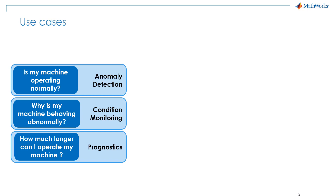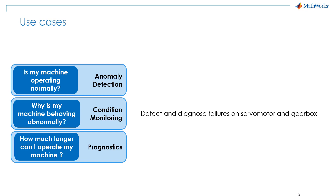We can then take this a step further and look at condition monitoring. With predictive maintenance algorithms, we can understand what is not working in the real system and why. In our case, we'll see how to build models that can detect and diagnose failures on the servomotor — the electrical side — and on the gearbox — the mechanical side.